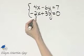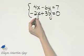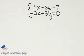Can you see that if I multiply the second equation through by two, I would have negative 4x here, the opposite of the coefficient 4x. So let's do that.